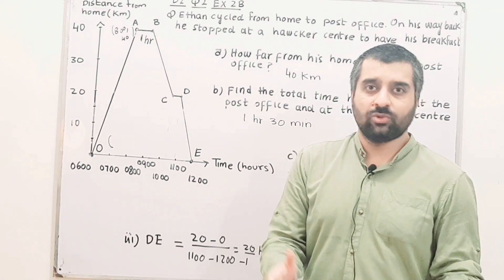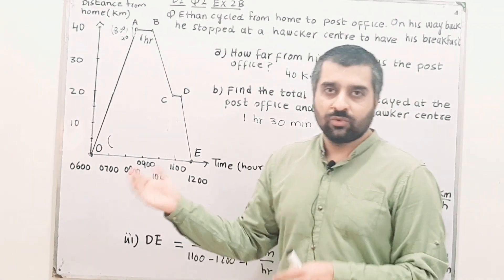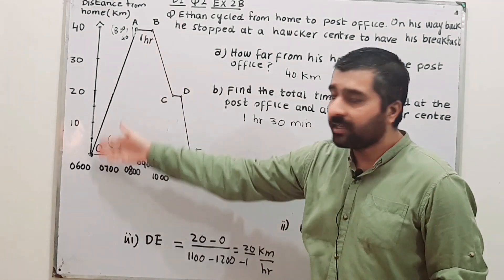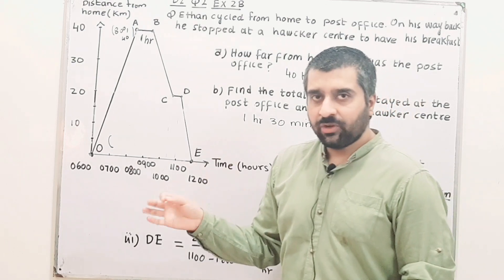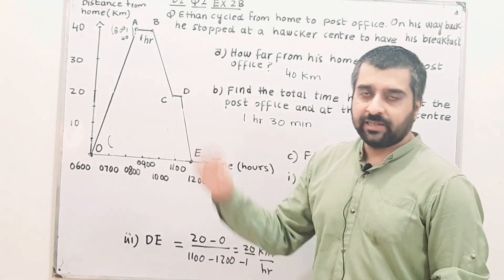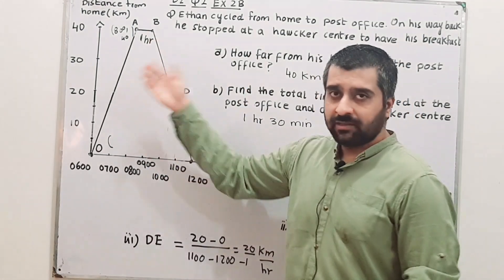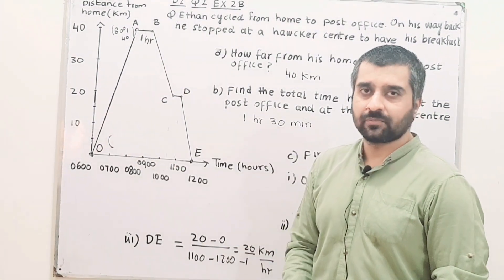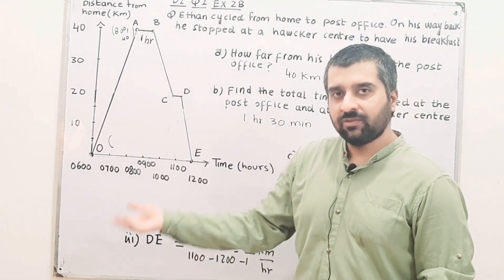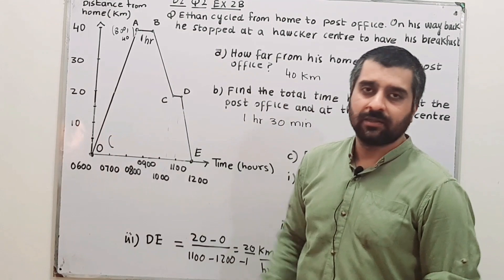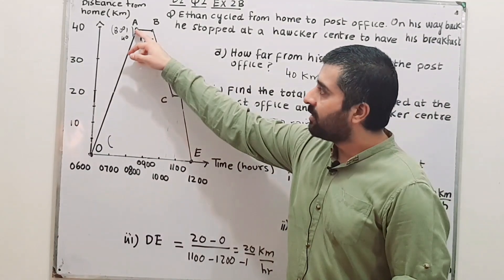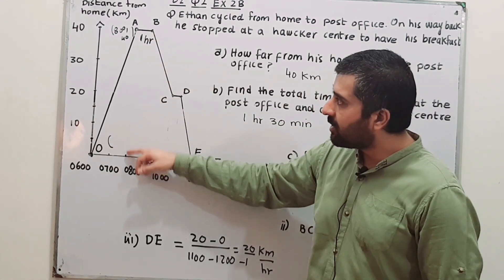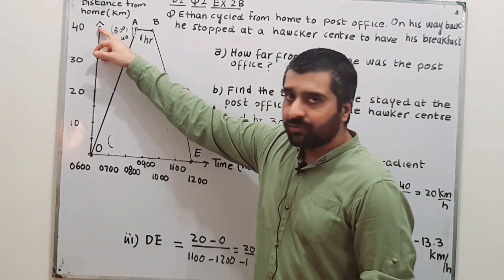They are the coordinates of two points which we are going to have on this line, O and A. Basically, one point is O where he started, and the second point is A that I am going to consider. We can have points anywhere else, but they should be on the line. Write down the coordinates of point A: the value for x is 8 hours, the value for y is 40 kilometers.